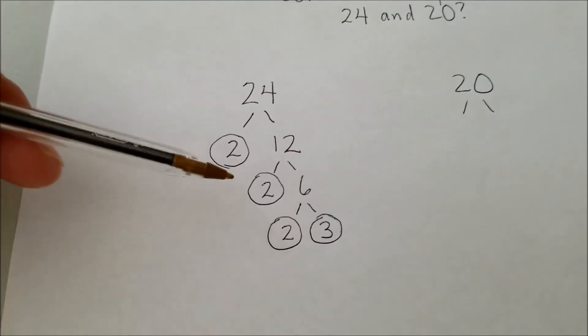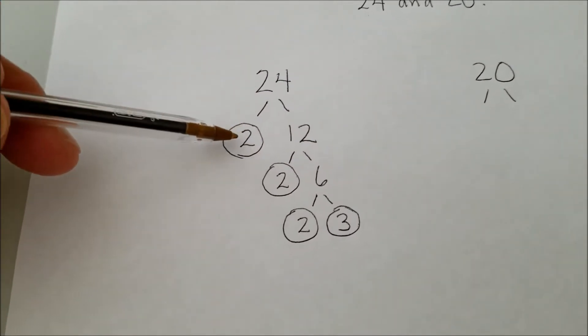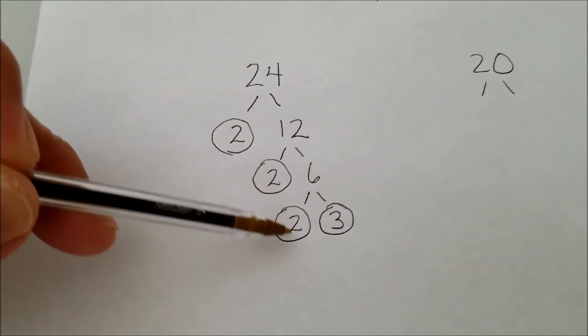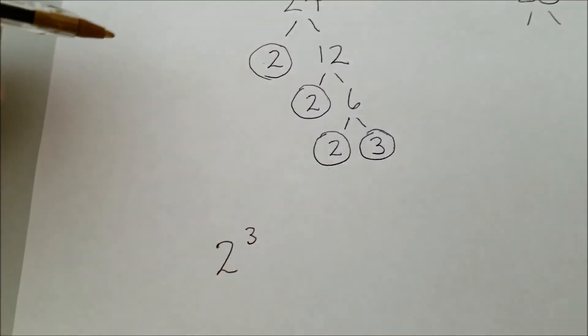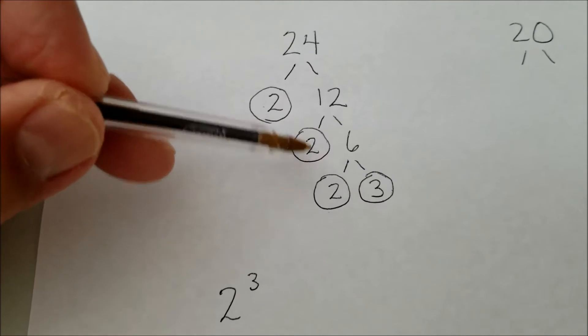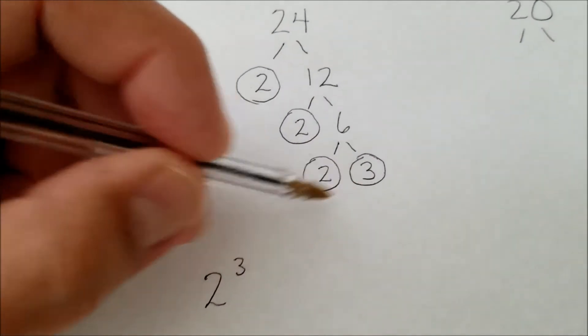Basically, when I multiply these prime numbers, I'll get 24. So let's go ahead and go over the answer. 2 times 2 times 2, which would be 2 to the third power, or 8. 2 times 2 is 4, 4 times 2 is 8. And then I have 1, 3.